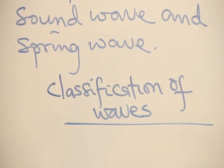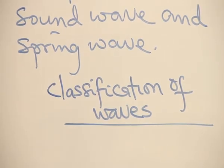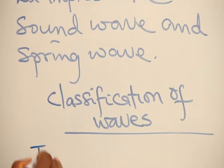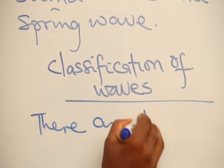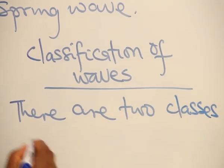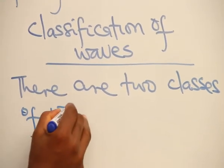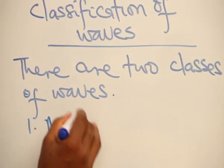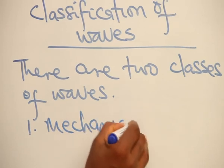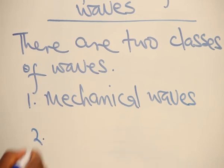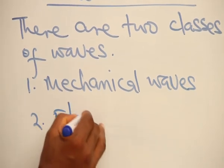This time we are considering whether the wave needs a material medium for its propagation or not. There are two classes of waves. The first class is called mechanical waves. The second class we call them the electromagnetic waves.